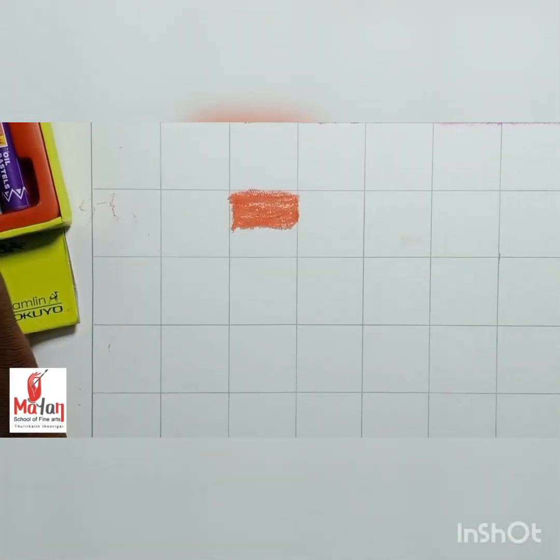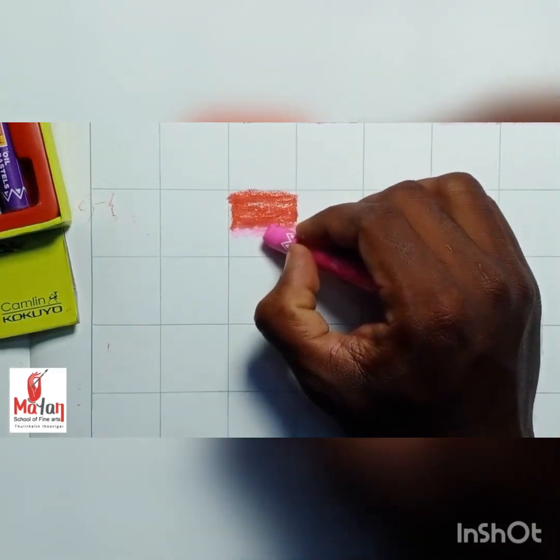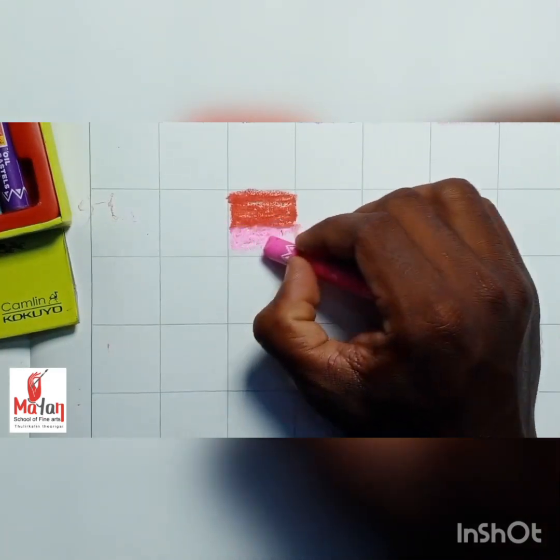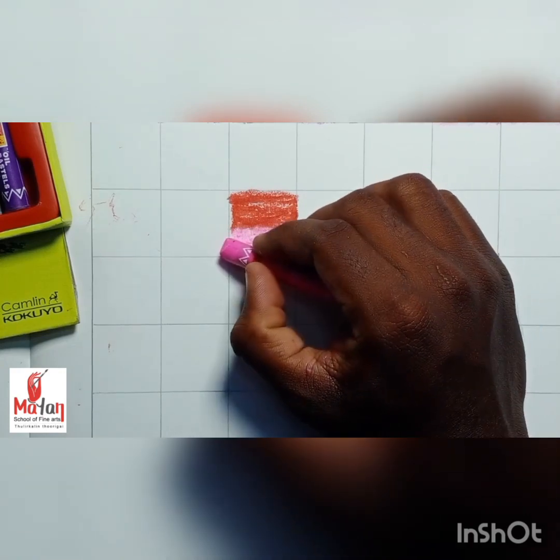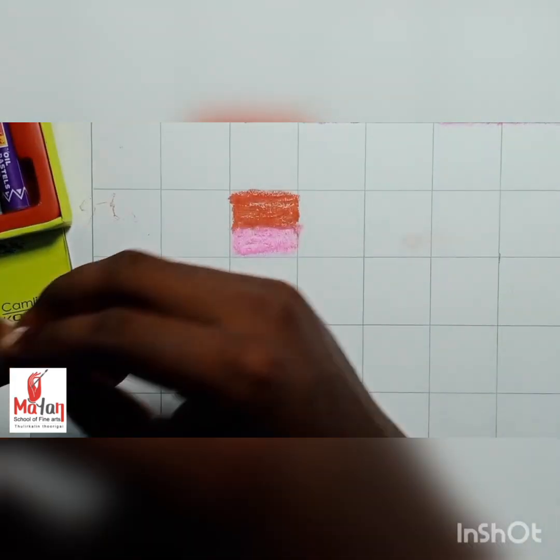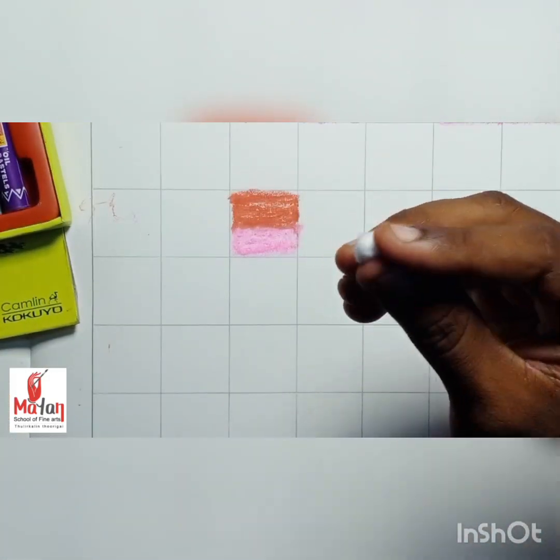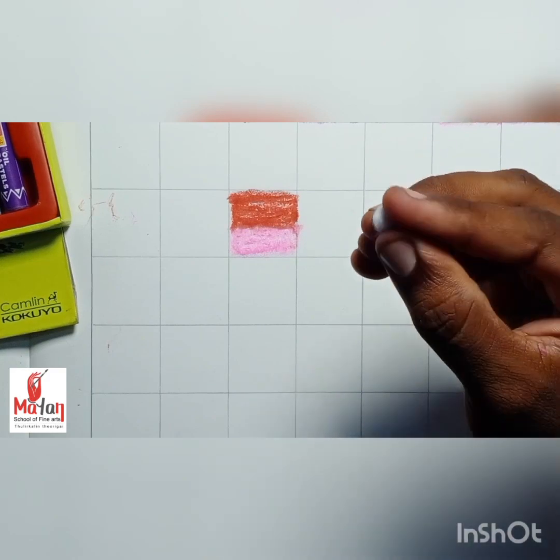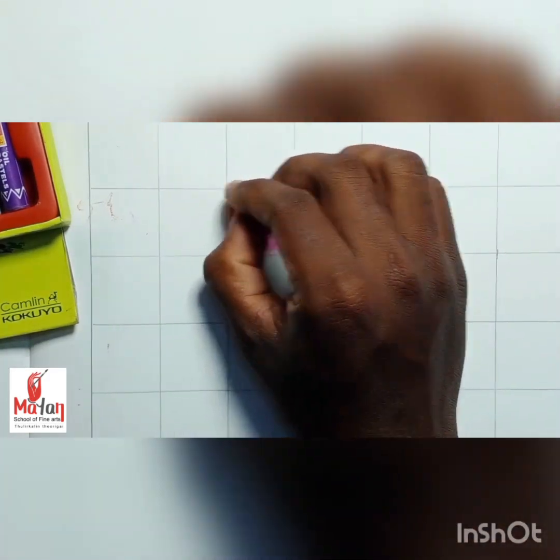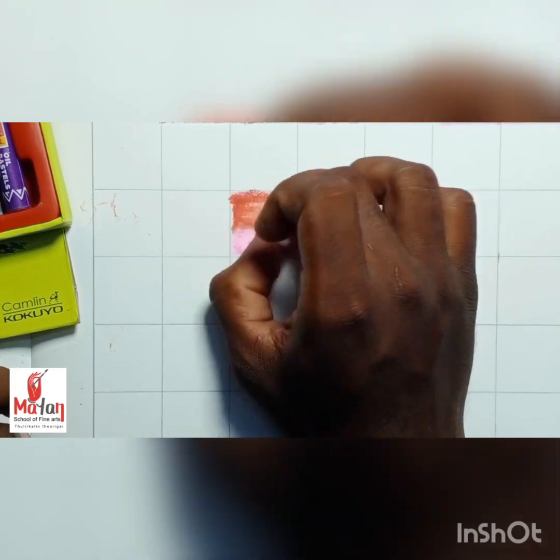Then I take the pink color and apply it on the second half of the cell. You can see that first one is a dark color, then I choose a light color. I take a little amount of cotton, roll it and make it very sharp. I blend on that surface.